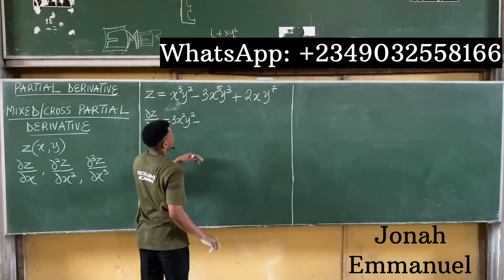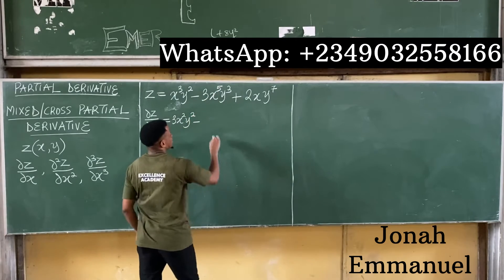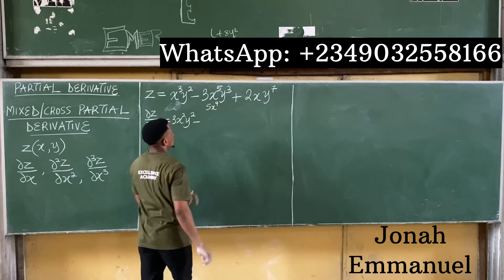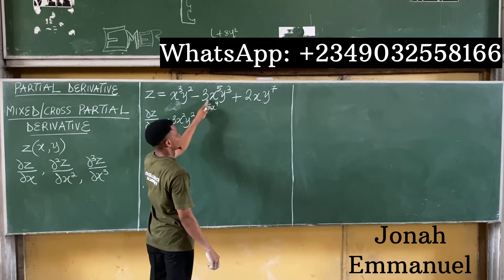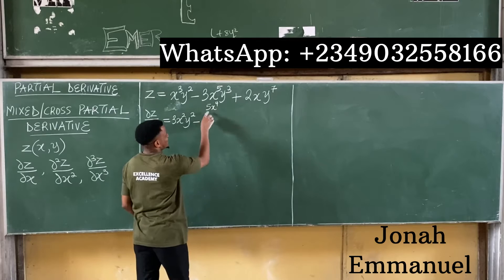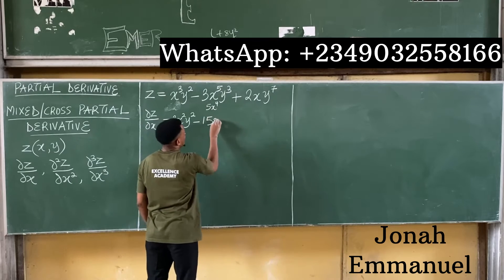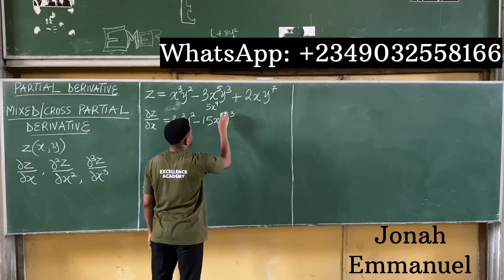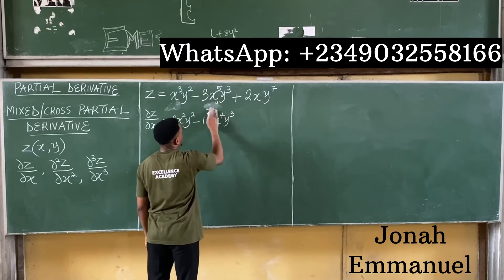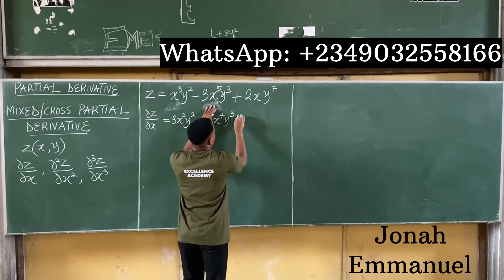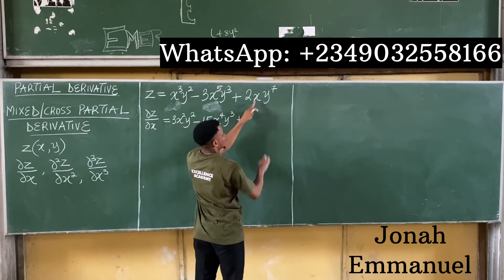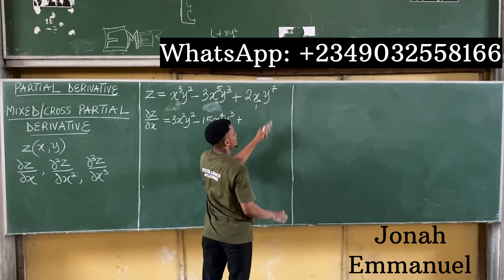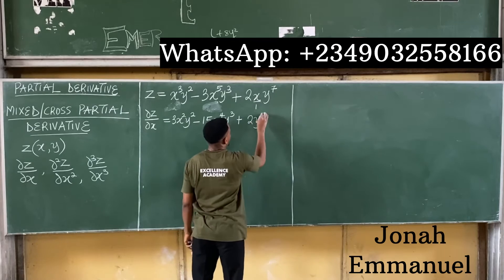For the second term, differentiating x to the power 5 gives 5x to the power 4. So 3 times 5 is 15, giving us minus 15x⁴y³. For the last term, differentiating x gives 1, so we get plus 2y to the power 7.